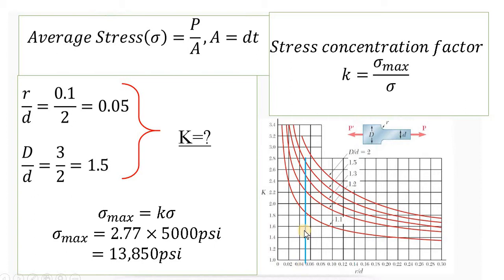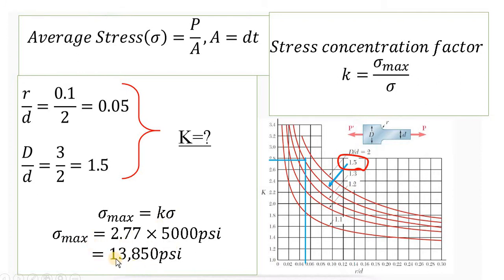The R/d value is 0.05. We draw a horizontal line and it's approximately around 2.8, but a little less than 2.8 — so K is approximately 2.77. You can consider something around 2.75 or so; this is up to you. The maximum stress equals K times normal stress, giving 13,850 pounds per square inch.